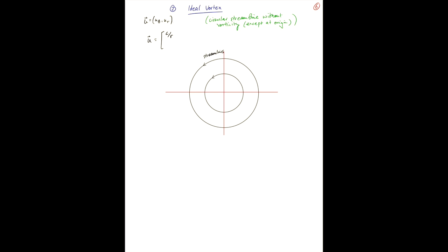The angular component of your velocity field is inversely proportional to the radius, to your distance from the origin. And there is, again, no radial component to your velocity field.